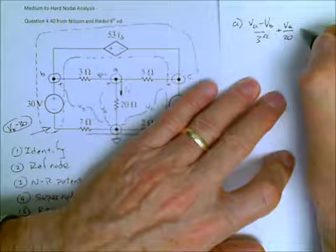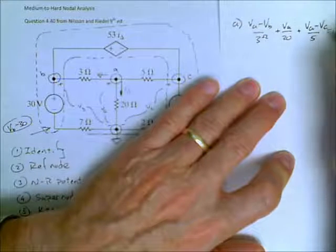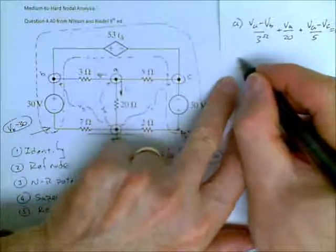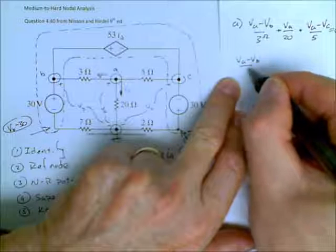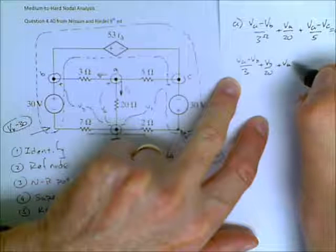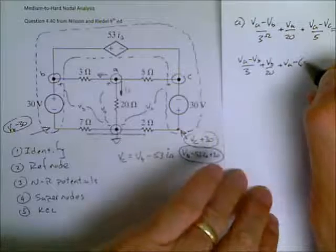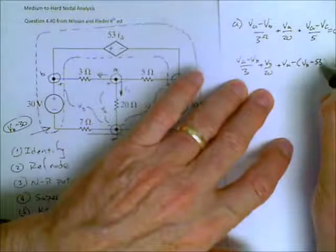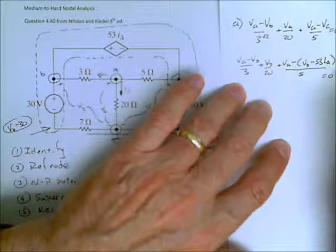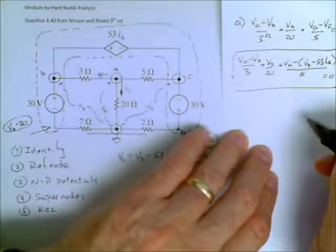And finally, we have plus VA minus VC over five. And all of that is equal to zero. Don't like that VC? Need to get rid of it. So, this becomes VA minus VB over three plus VA over 20 plus VA minus... Well, what is VC? VC is defined here as VB minus 53 I delta. And all of that is divided by five. And all of that equals zero. So, we have one equation in three unknowns.